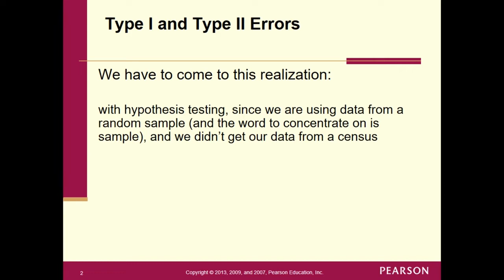That means we didn't get our data from a census — we have incomplete information. Because we have incomplete information, it is possible that we made a mistake in our decision. It's not that we did anything wrong. The name 'Type 1 error' or 'Type 2 error' makes it sound like we did something wrong, but we didn't. We took our random sample with no calculation errors — this stuff happens simply by chance, kind of bad luck.